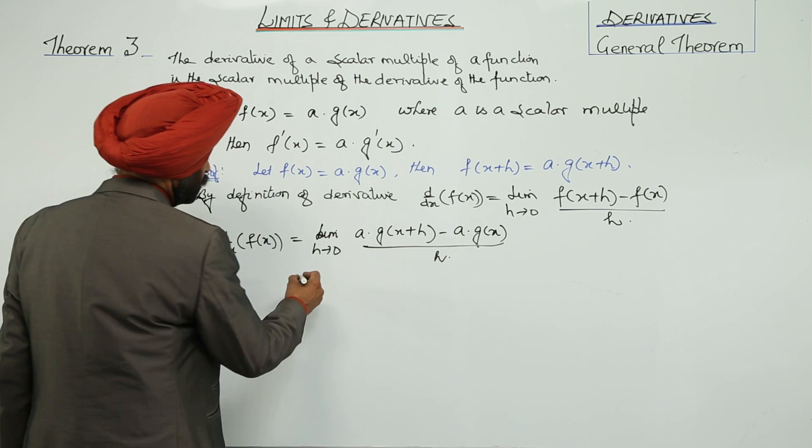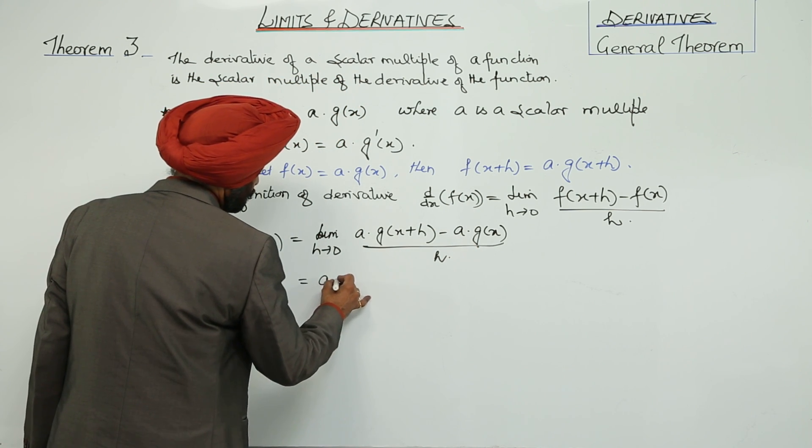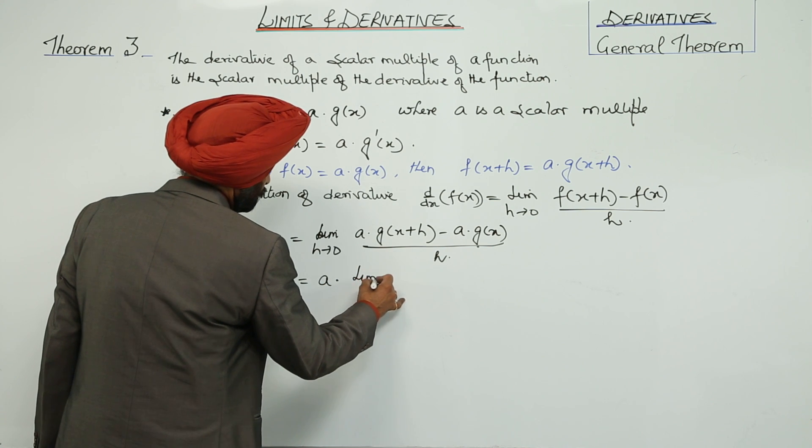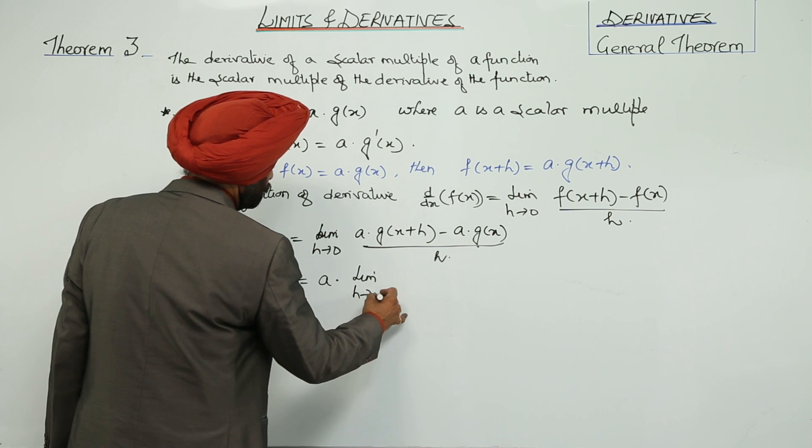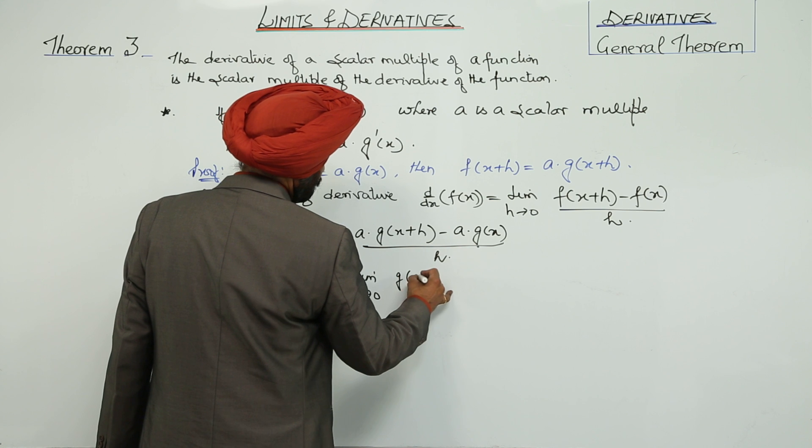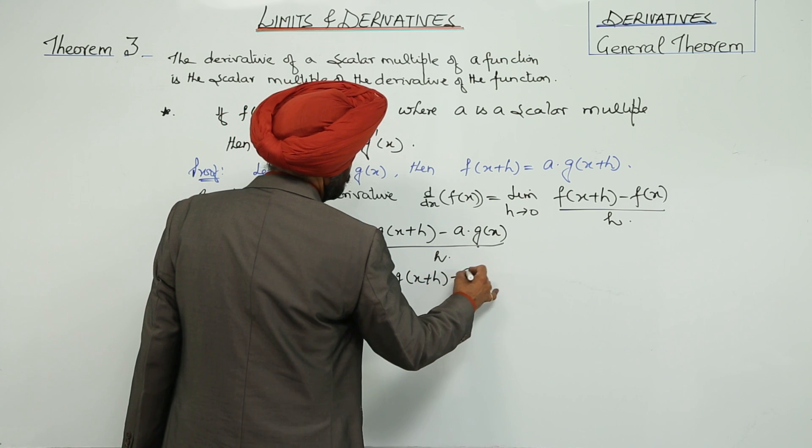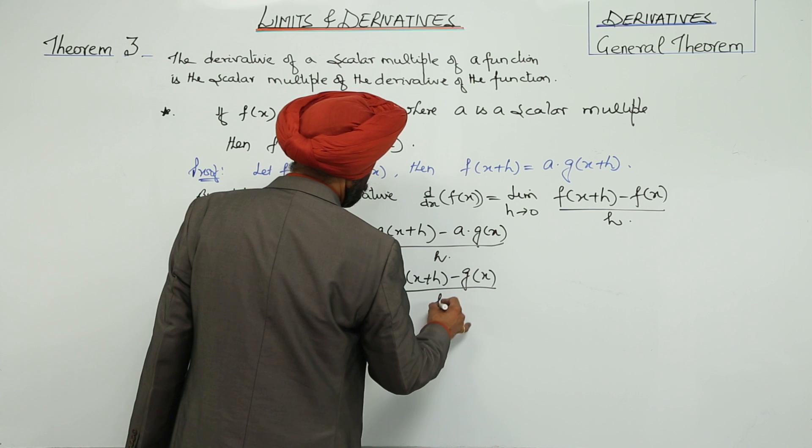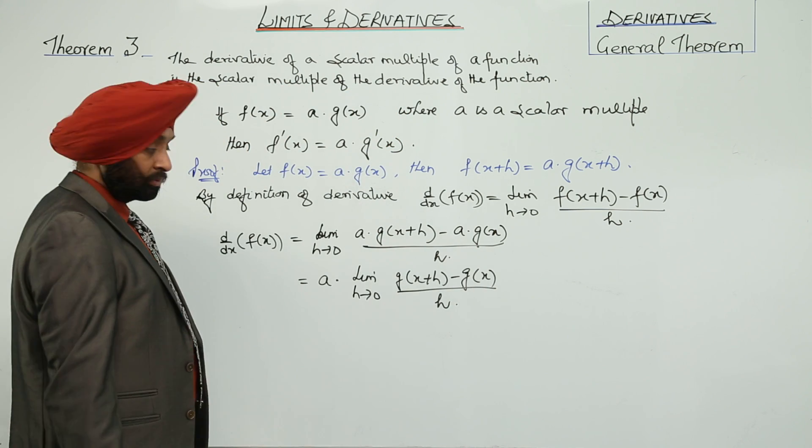Taking a as a common factor from both terms, we have a times the limit as h approaches 0 of [g(x+h) - g(x)] over h.